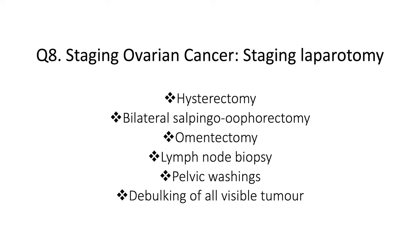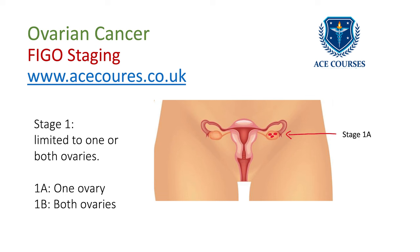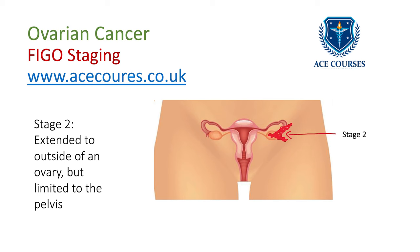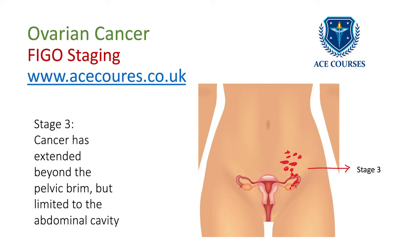The upper abdomen should also be fully examined. Briefly, Stage 1 is when cancer is limited to one or both ovaries — 1A in one ovary, 1B in both. Stage 2 is when the cancer has extended but remains within the pelvis. Stage 3 is when the cancer has extended beyond the pelvic brim into the abdomen but not beyond the abdominal cavity. Stage 4 is when there are distant metastases, for example secondaries in the lungs.